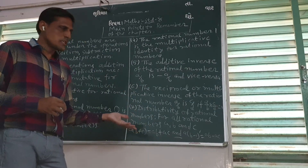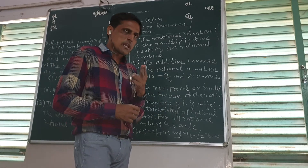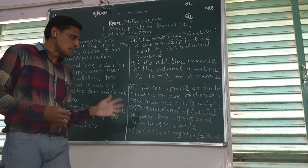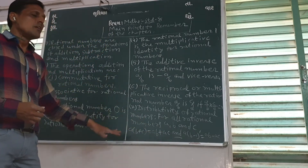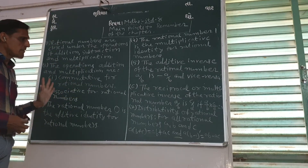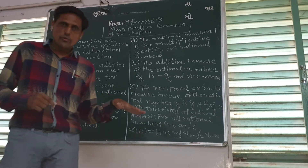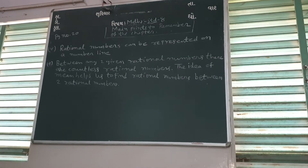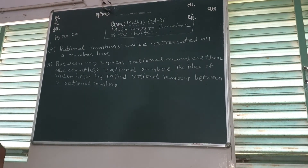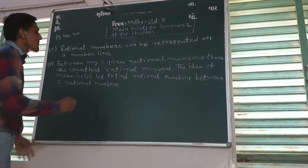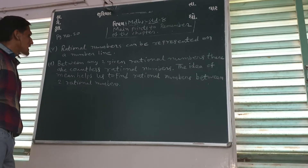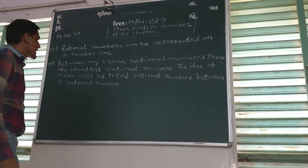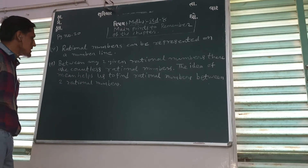So these are all the properties we have covered in the chapter. Two points remain — points 8 and 9 — then the chapter will be over. Rational numbers can be represented on the number line. Between any two given rational numbers, there are countless rational numbers.